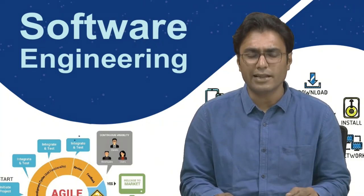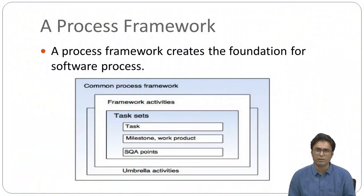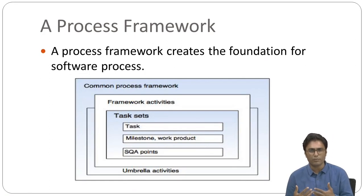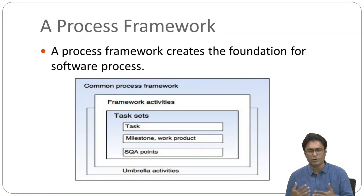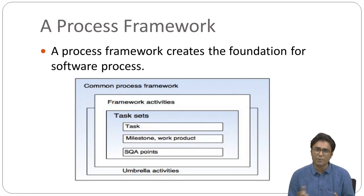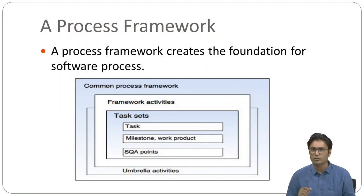Next, we have the process framework. To build any product, a series of predictable steps — a roadmap — are designed; this is called a process, and the same applies to software. A software process helps achieve timely, high-quality results. It consists of a framework for tasks required to build high-quality software. A process framework creates the foundation for a software process, beginning with identifying framework activities applicable to all software projects. The framework also encompasses a set of umbrella activities applicable across the entire software process.